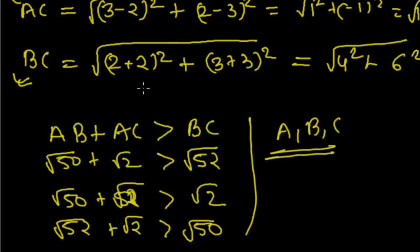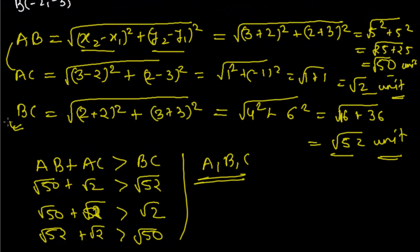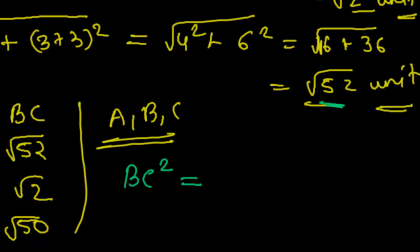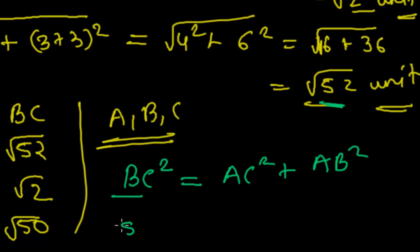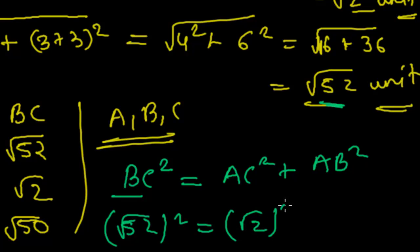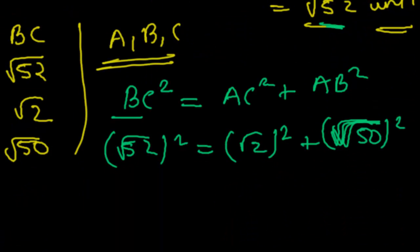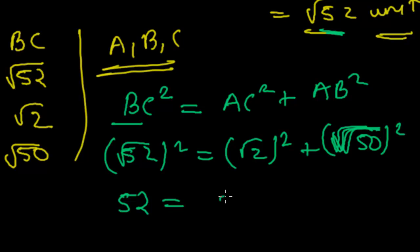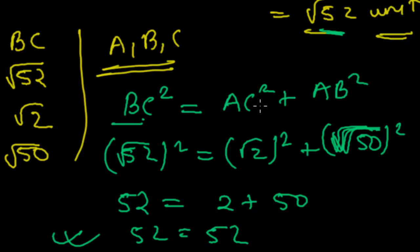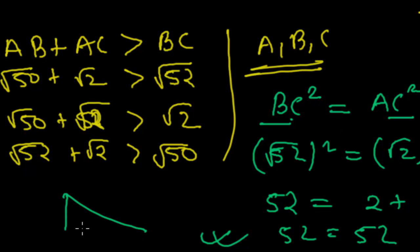Now which type of triangle is it? We have BC = √52, AC = √2, and AB = √50. Let me check: BC² = AC² + AB². So (√52)² = (√2)² + (√50)², which gives 52 = 2 + 50 = 52. Since the Pythagorean theorem holds here — H² = P² + B² — it must be a right angle triangle.